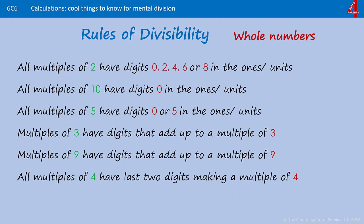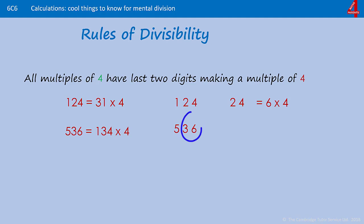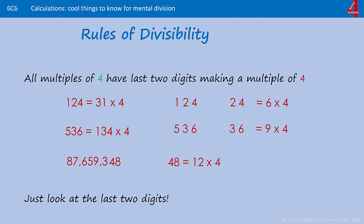All multiples of 4 will have the last two digits making a multiple of 4. I can say with confidence that 124 is a multiple of 4 without knowing it's 31 times 4 — just look at the last two digits, 24, because 24 is a multiple of 4. The same applies to 536: just look at the last two digits, 36, and 36 is a multiple of 4 — it's 9 times 4. With larger numbers, you just need to look at the last two digits; for example, 48 is 12 lots of 4.